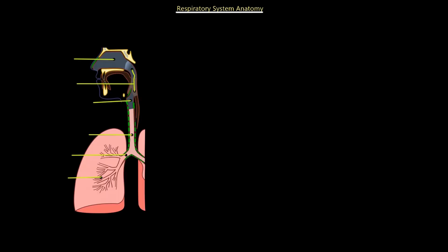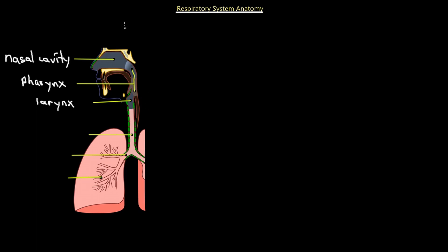We'll begin the unit with anatomy of the respiratory system, so we have a couple of anatomical labels to go through. Beginning with the upper respiratory tract, we have the nasal cavity at the top, then this little part at the back of the throat is called the pharynx. Going a little bit lower past the pharynx, we have the larynx, and in the larynx we have our vocal cords — that's where sound comes from.